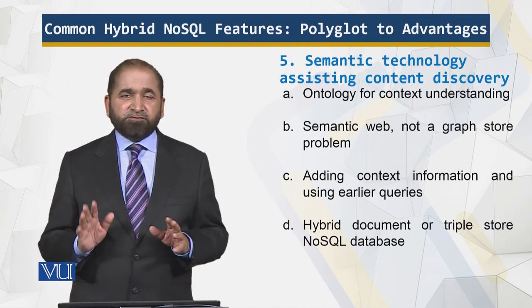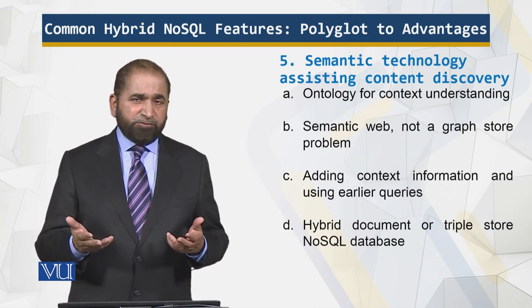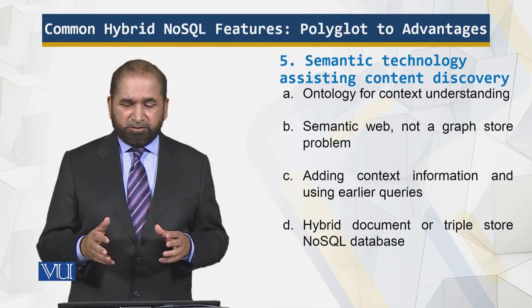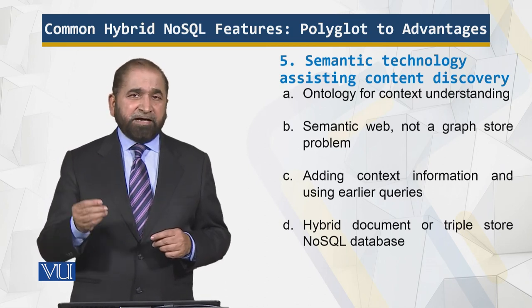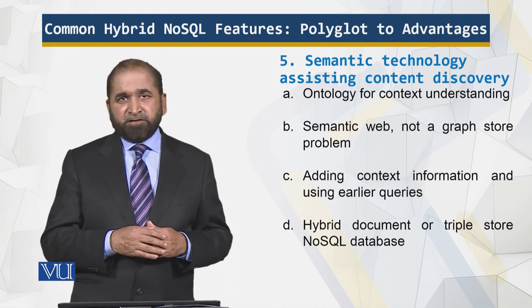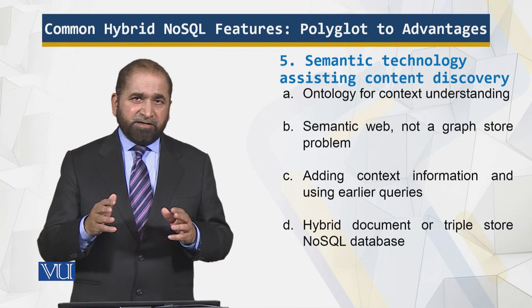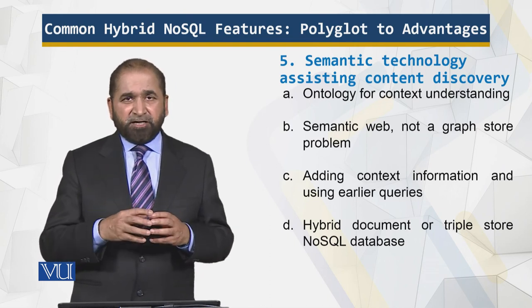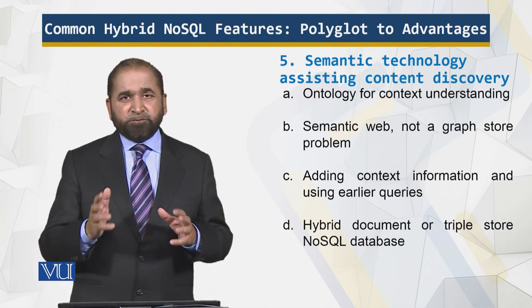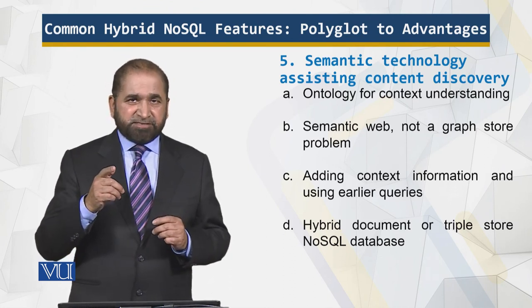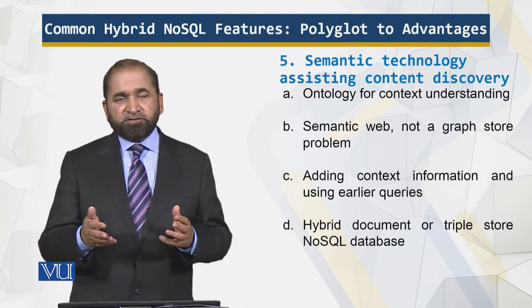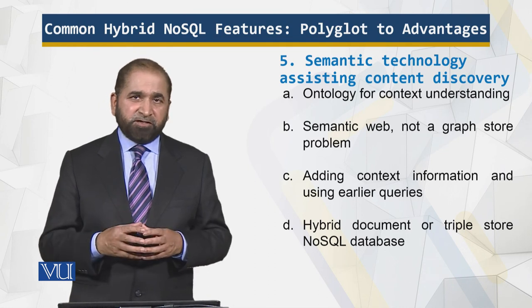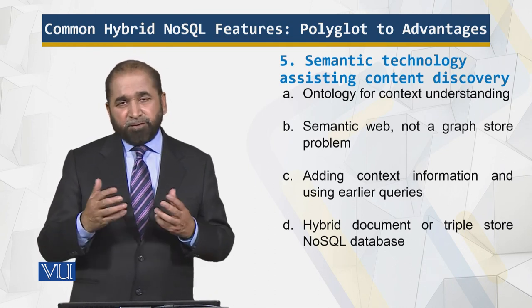Remember that semantic web is not a graph store problem. The triple store is based on subject, predicate, object. You can make it more powerful by adding the context in which the search was made, because a search is not sufficient until it differentiates what you are looking for. If you look at prior search results and integrate them, that helps present results based upon which people were differentiating using similar keywords. You can have a combination of the NoSQL document database with the triple store, which will reap the benefits of both data structures and will be a powerful hybrid solution.